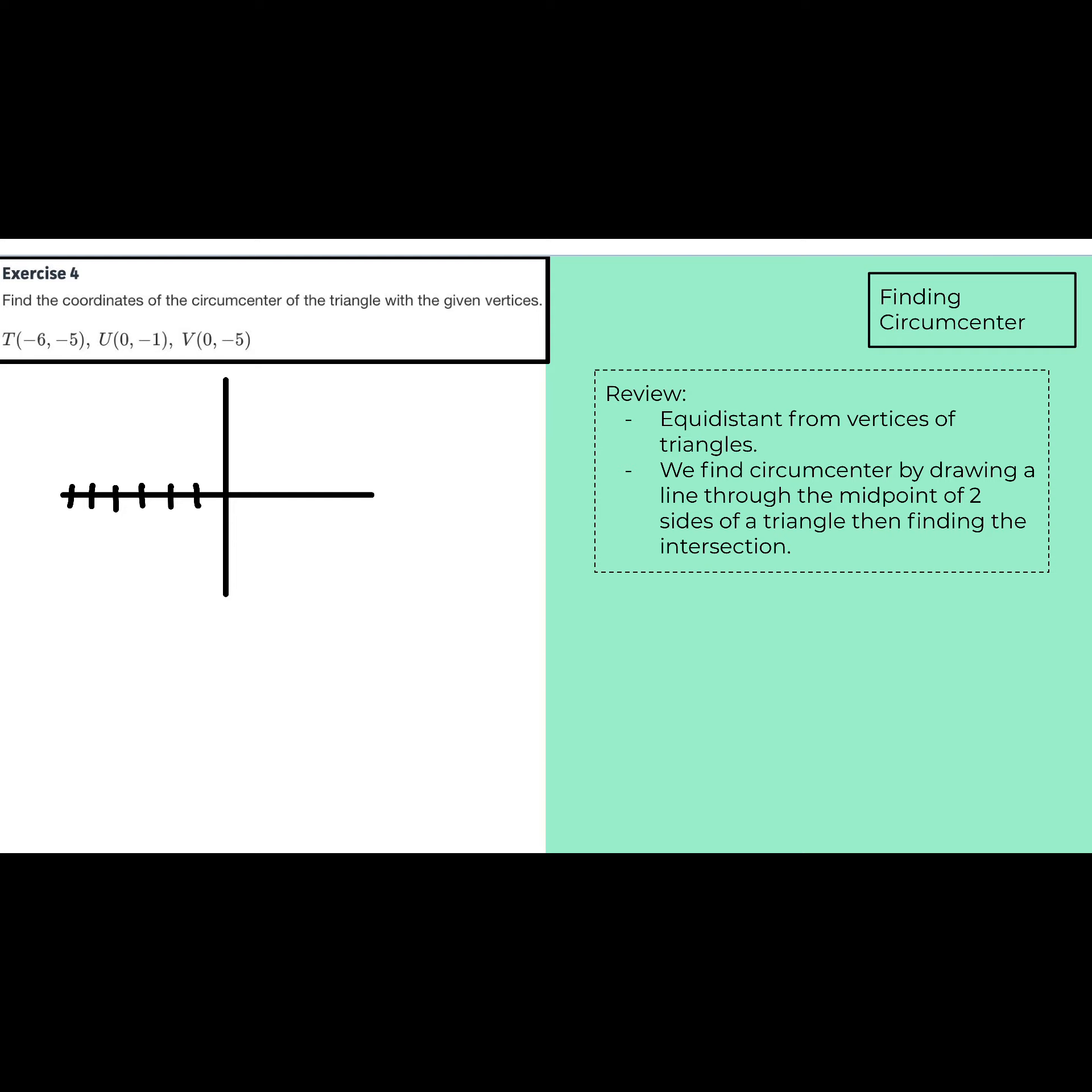If you already wrote these notes down and know exactly where they're at, don't feel like you have to rewrite everything down. So, as a review, circumcenter is equidistant from the vertices of the triangle. So, when we find the circumcenter, it's the same distance from each of those points.